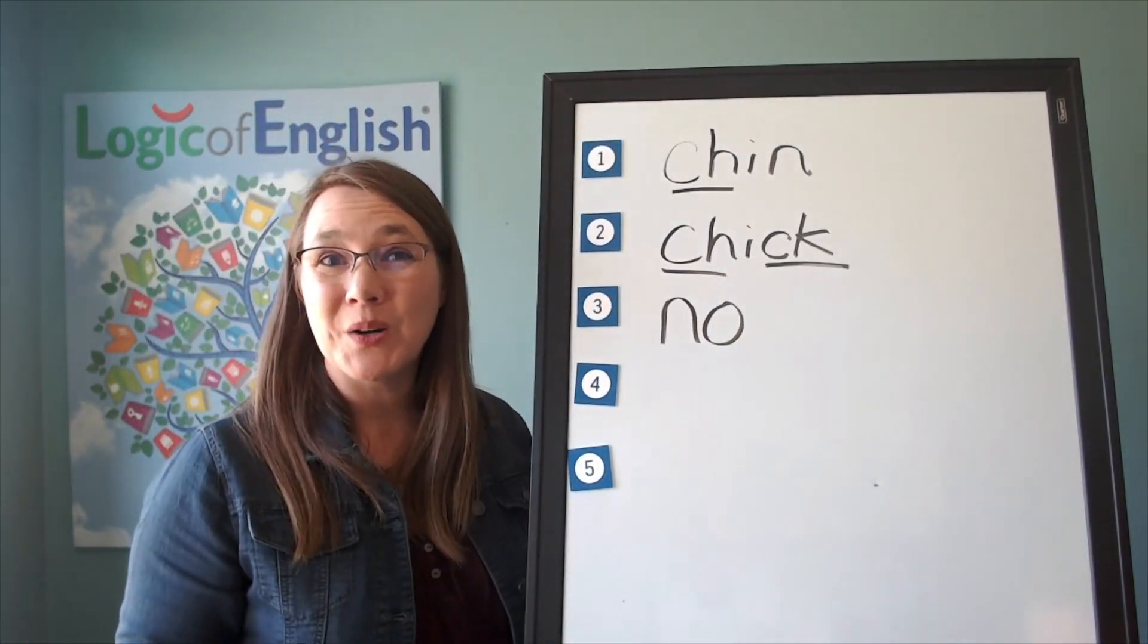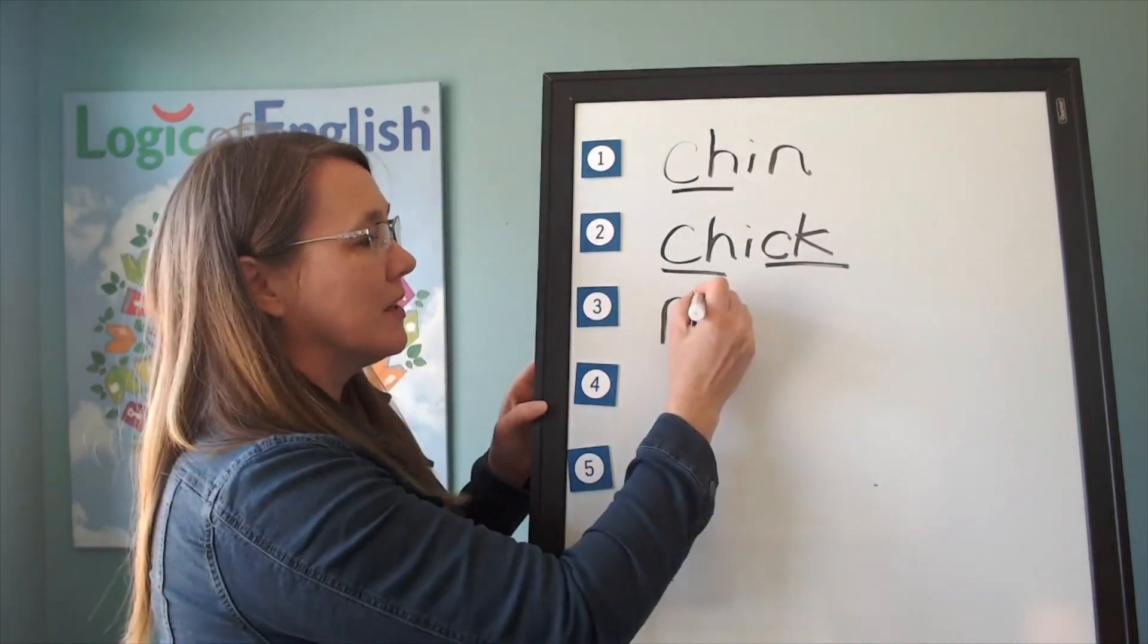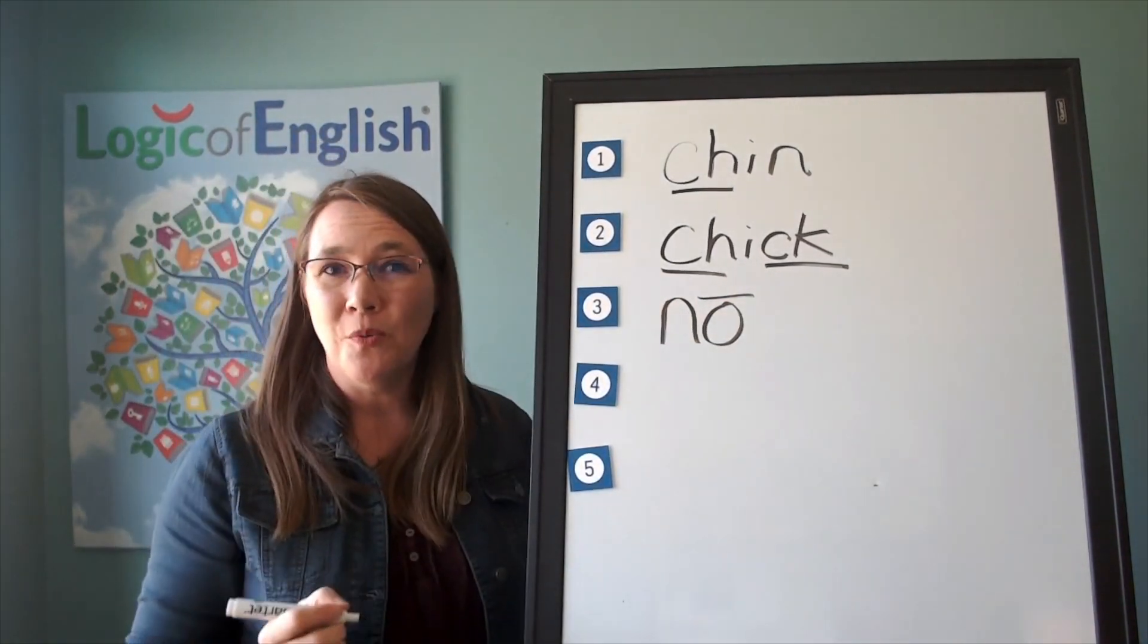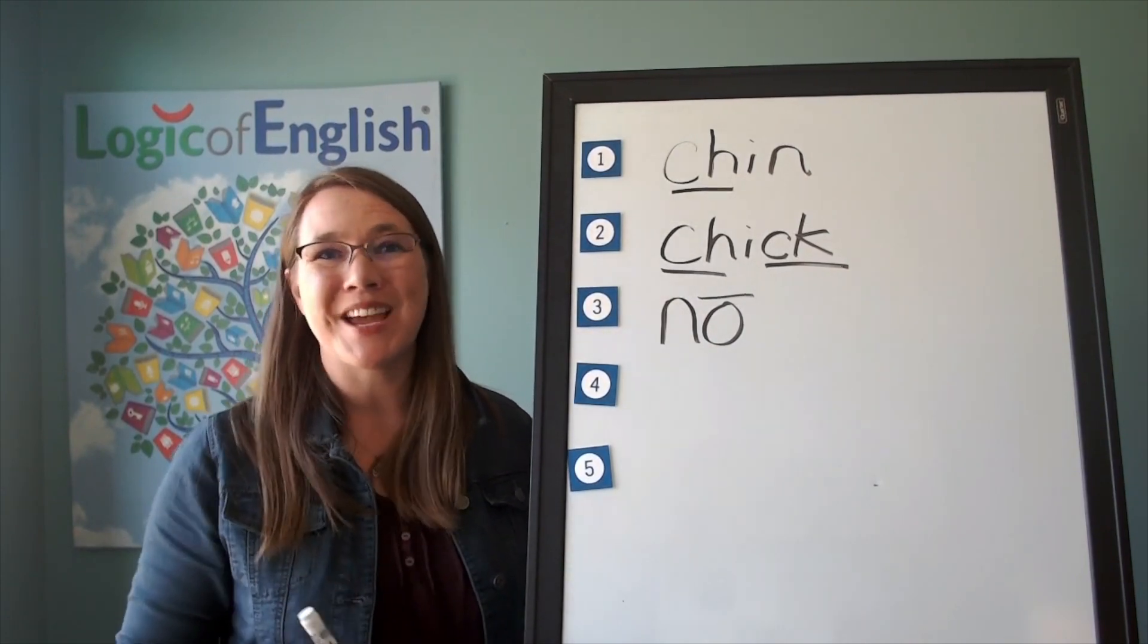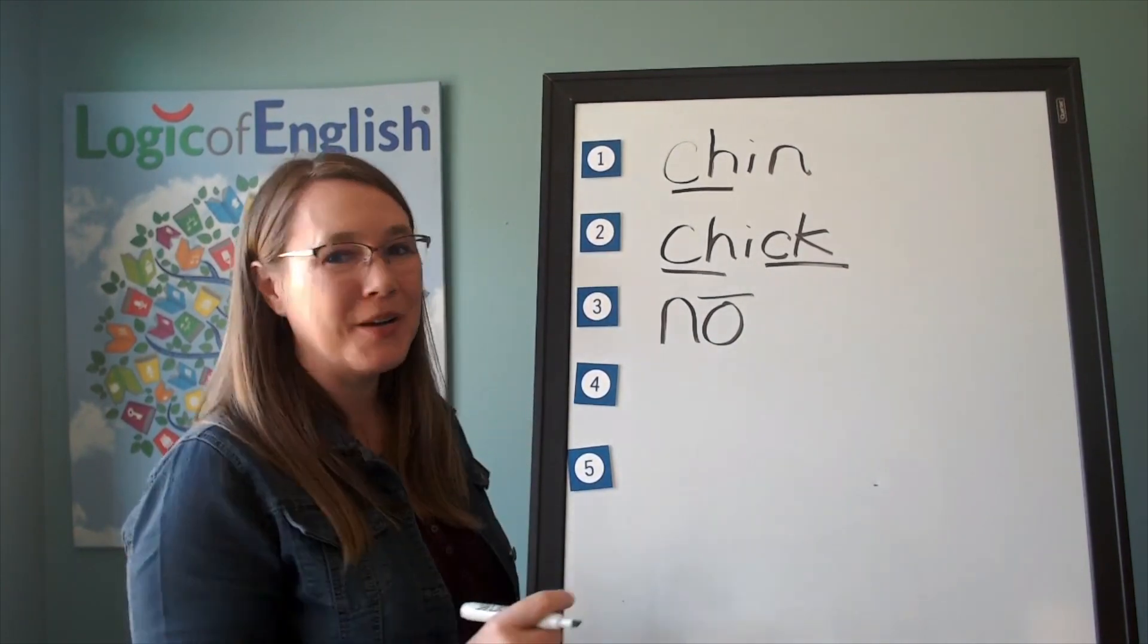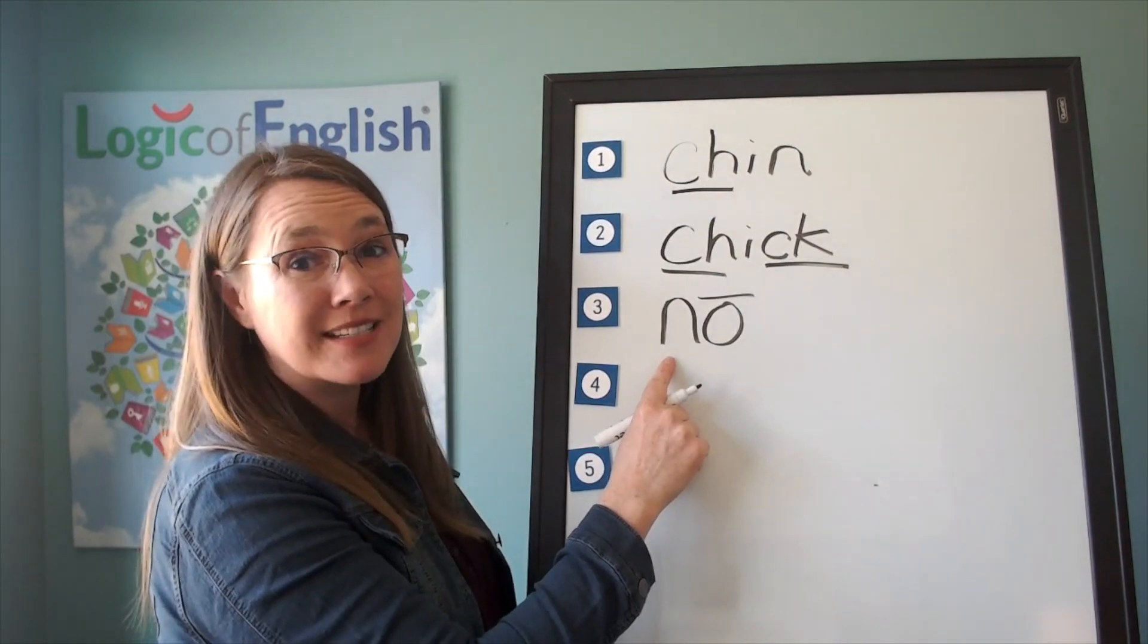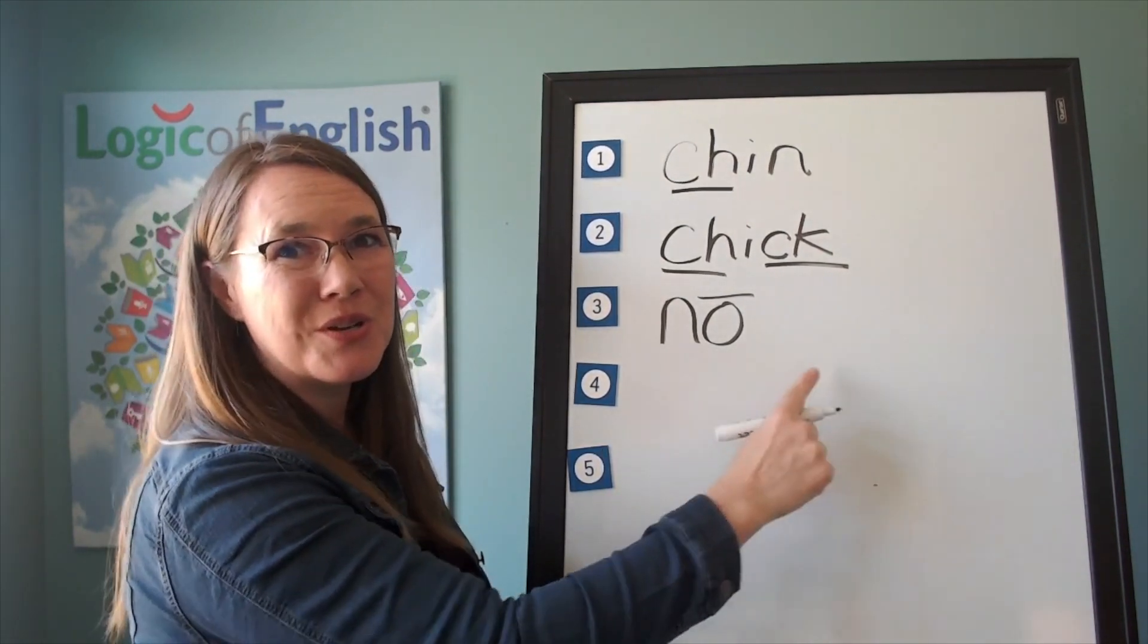Great. Now help me to write it. N-o. And how will we mark no? We'll put a line over the o. Why? A-e-o-u usually say their long sounds at the end of the syllable. Great work. Let's read it. N-o. No.